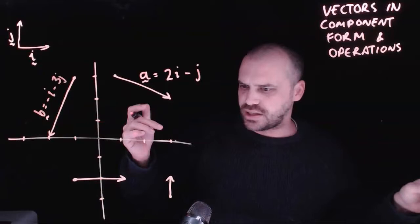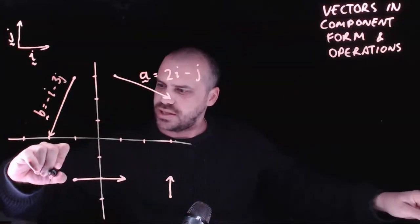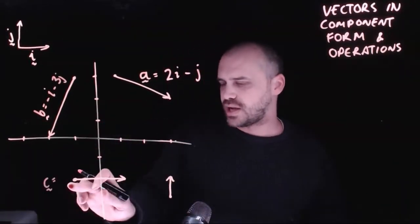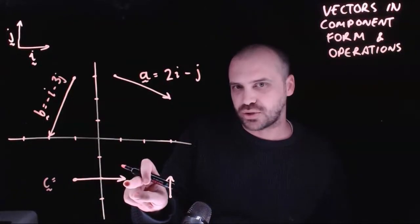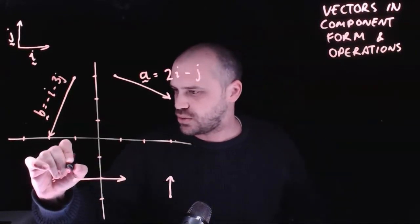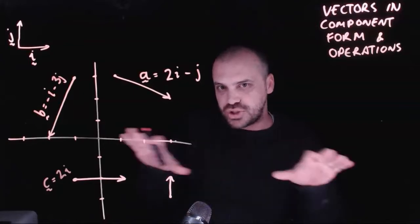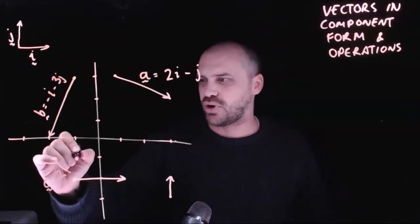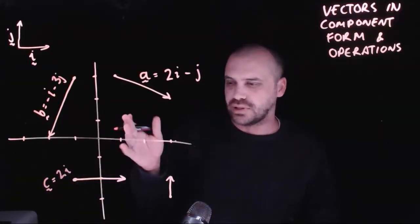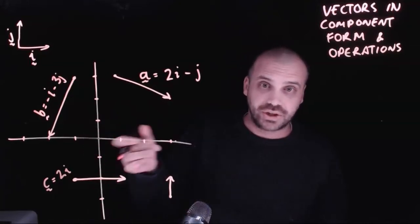What about vector c? Vector c is starting from here and moving two across. So that's two i. And is it moving up or down? No, it's not. So there's no j component. We don't write zero j, we just leave it. That vector is two in the i direction.